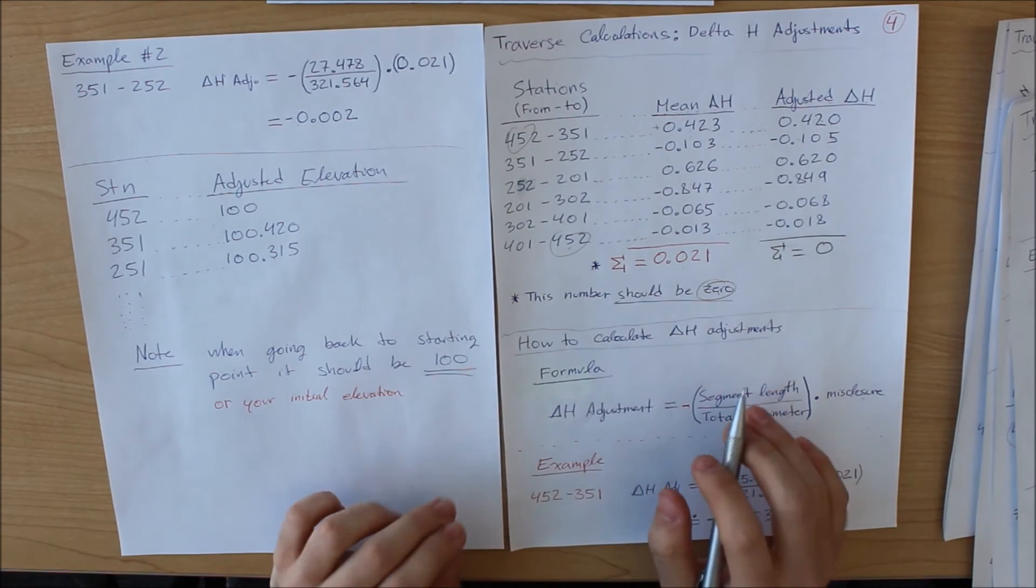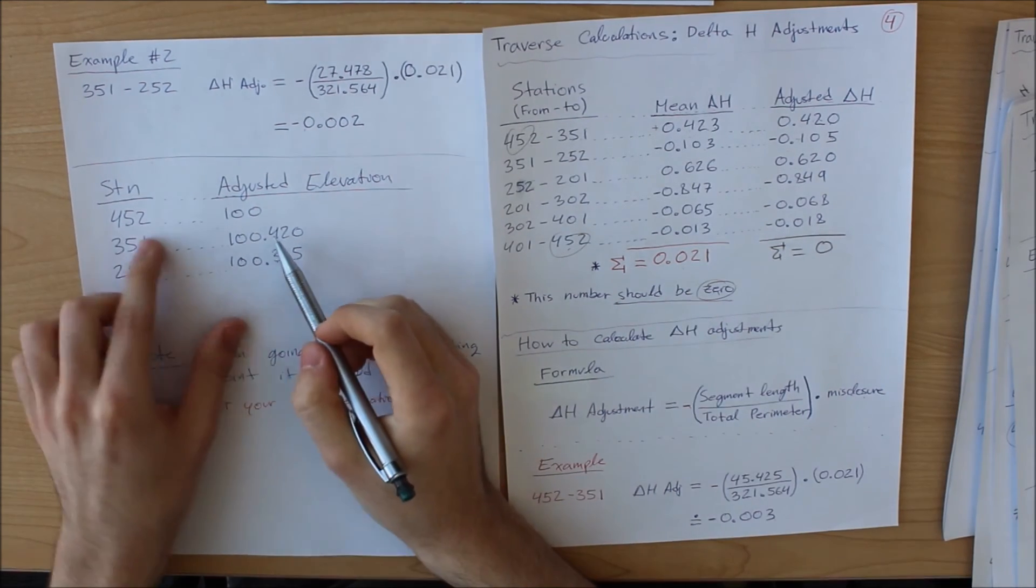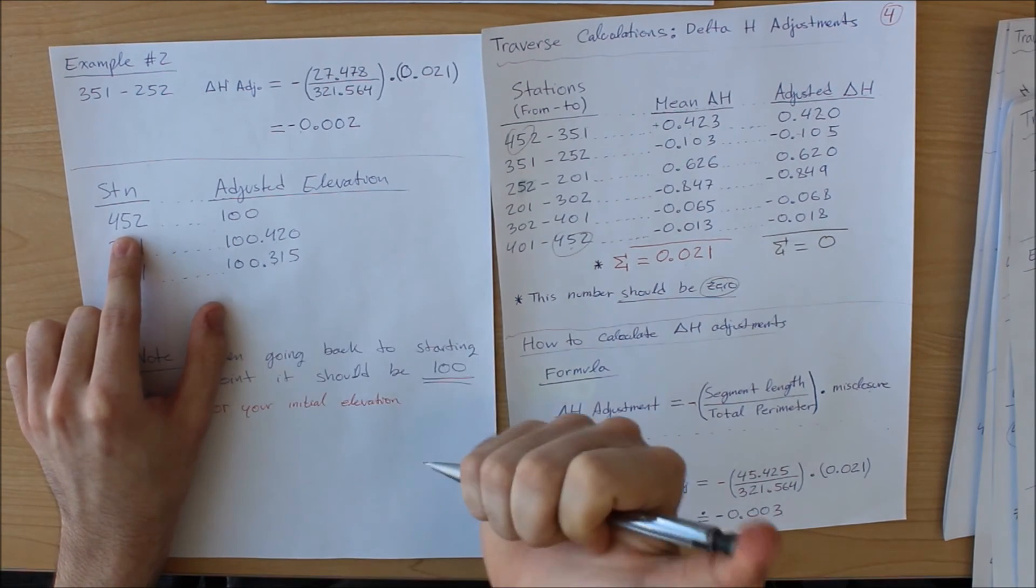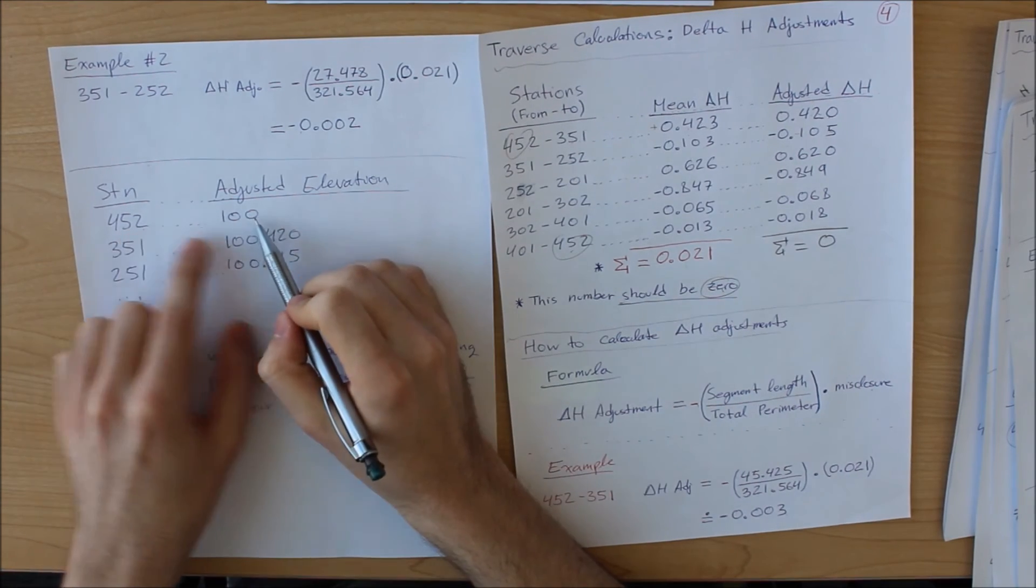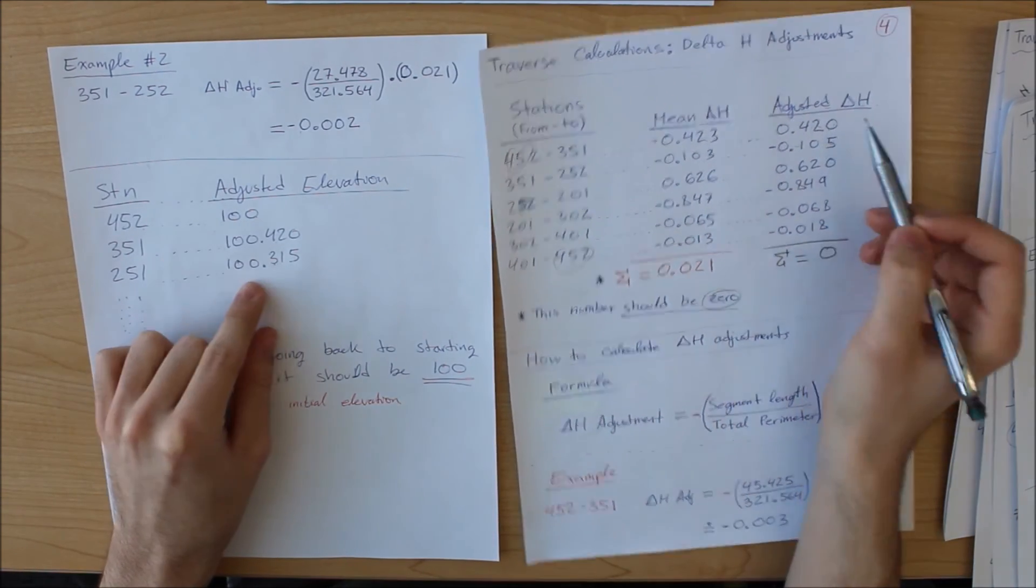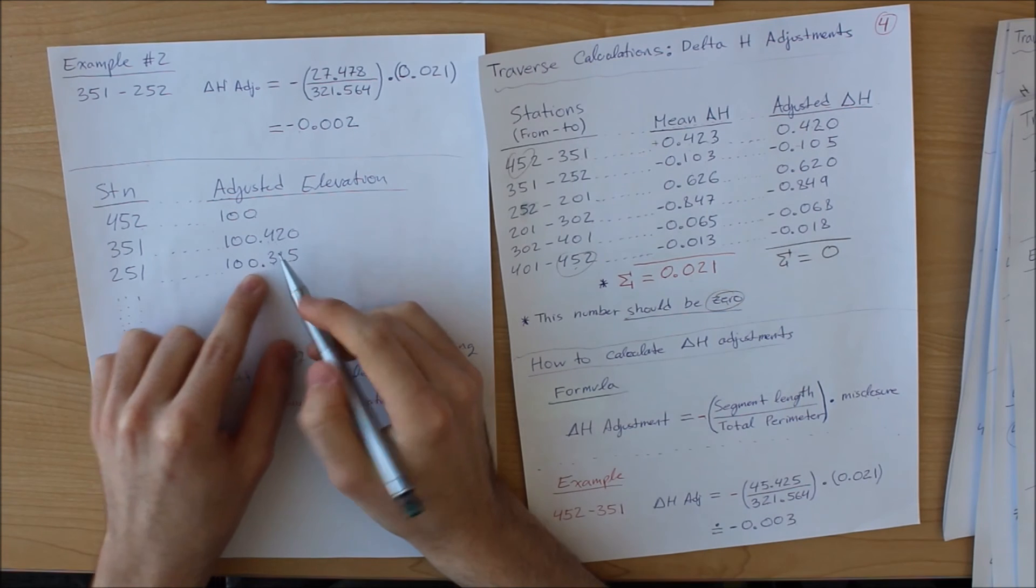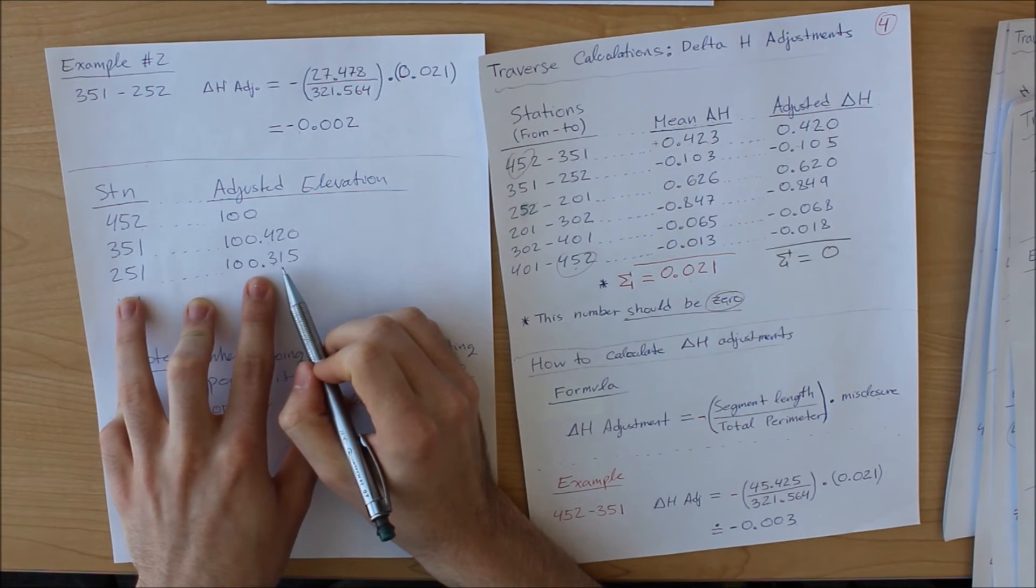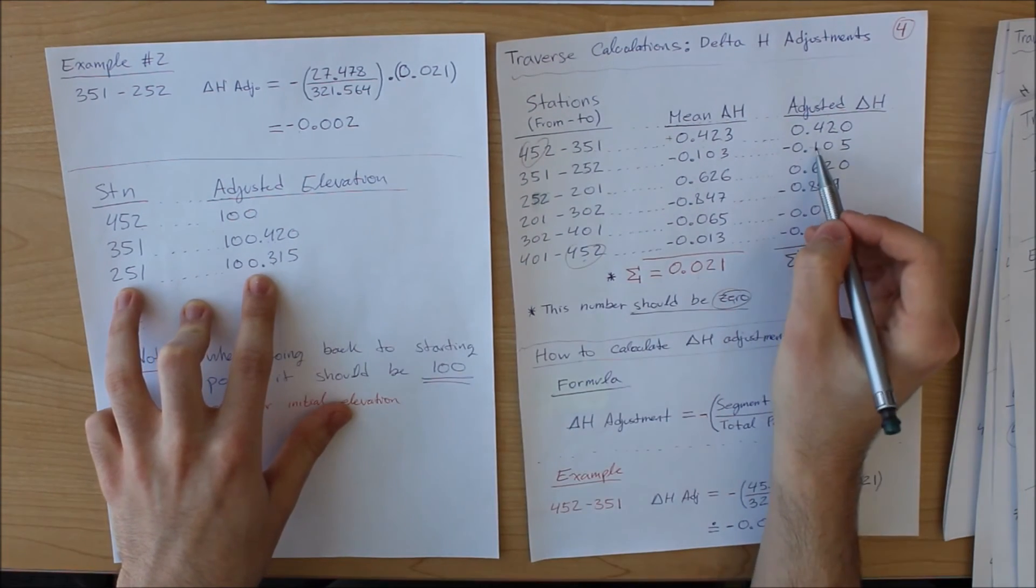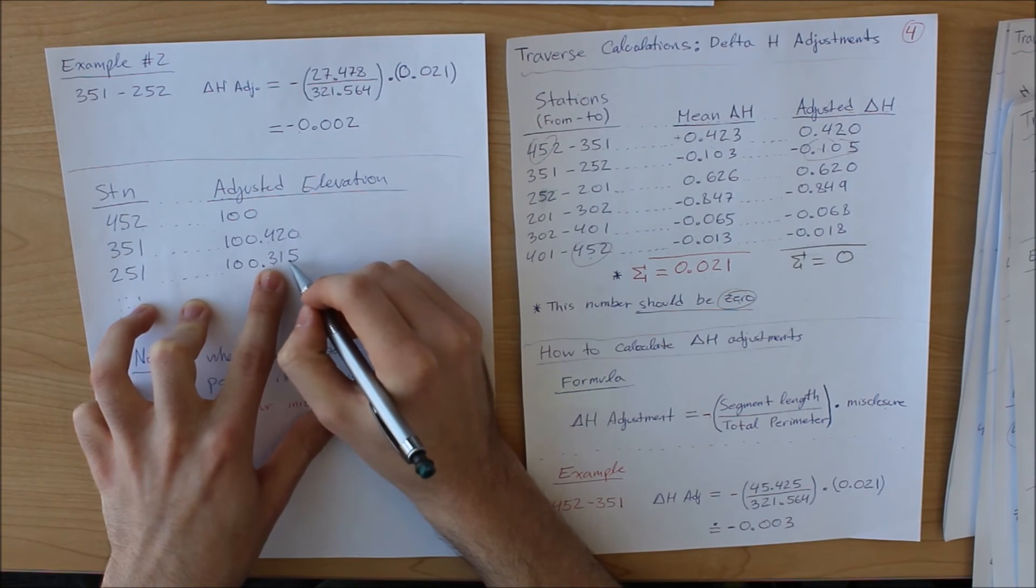Now, the final step is to take your initial elevation and add each one to the next one. What I mean by that is the following. I am given 100 meters above sea level as the original elevation at 452, and now that is my starting point. And I am going to add the next one. So from this point to this point, we go up by this much. Therefore, the elevation at 351 is going to be 100.420. And likewise, for the next one, it will be as follows. I'm using 251. So from this point to this point, we go up by this much. And then we add this number to the previous one.